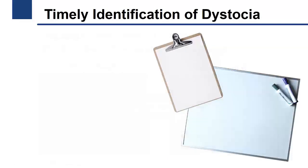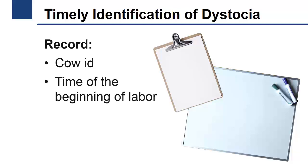In order to keep track of labor progress and accurately communicate this critical information to the person working the following shift, employees should record the cow ID, the time of the beginning of labor, along with any other detail of the calving, in their notebook or, if available, on a whiteboard in the maternity area.